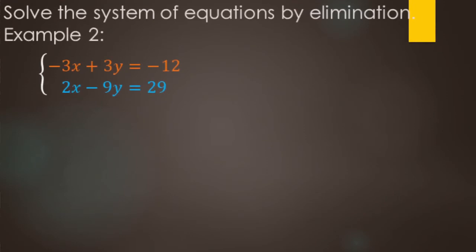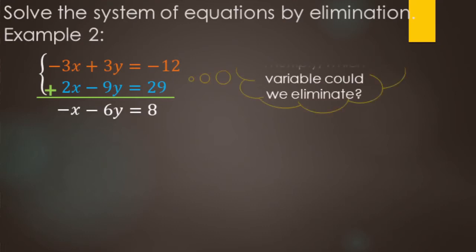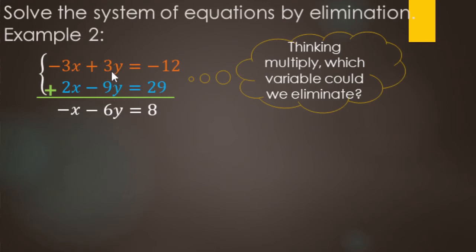We're going to solve this system by elimination — adding both equations to eliminate a variable. Negative 3x plus 2x makes negative x, 3y minus 9y makes negative 6y, and negative 12 plus 29 makes 8. In this case, we did not eliminate a variable, so we need to think about multiplication. Looking at the y's, we have a 3 and a 9 — if we multiply the top equation by 3, they'll match but one will be negative.